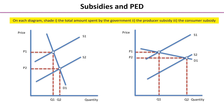We would like you on each diagram now to shade: first of all, the total amount spent by the government; secondly, the producer subsidy — the amount received by the producer; and thirdly, the consumer subsidy. We would like you to pause the video in a moment and colour in those three areas. Please stop and think carefully about the first one — the total amount spent by the government — we just need to be a little bit careful. Pause the video and do the exercise.